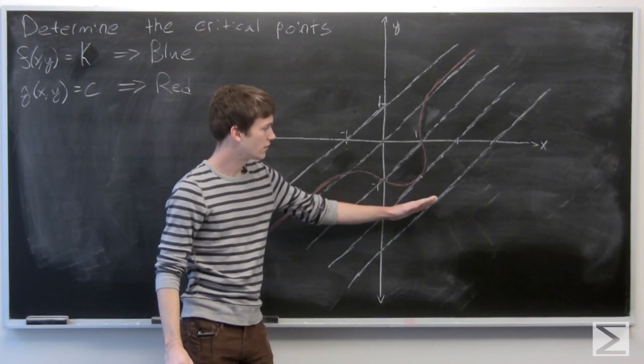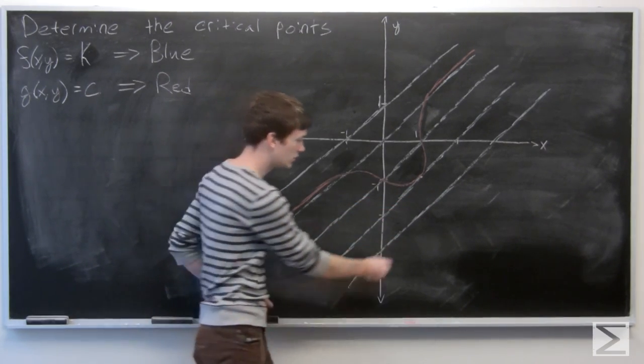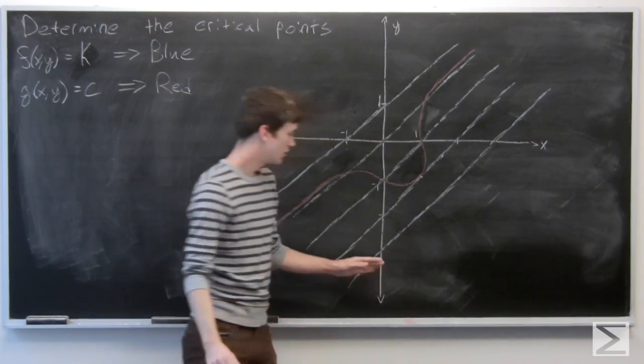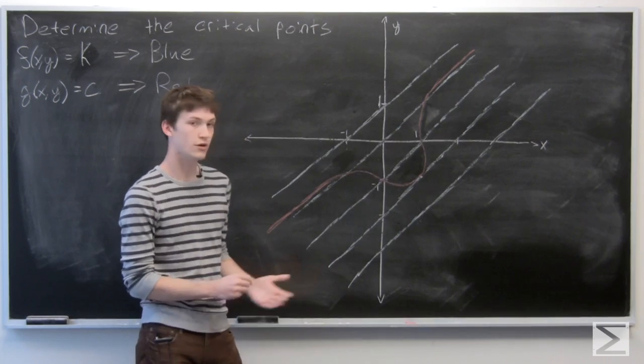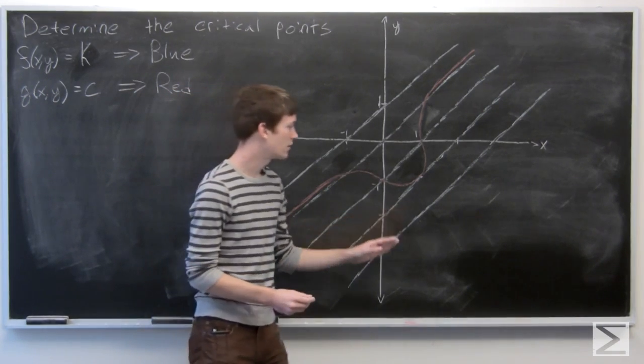Clearly, when f is equal to whatever this value is, it doesn't seem to intersect our constraint g, so it's not going to be on there.